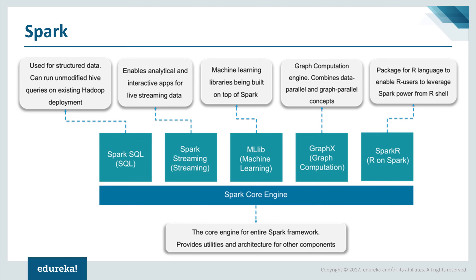Apache Spark is a lightning-fast cluster computing technology designed for fast computation. The main feature of Spark is its in-memory cluster computing, which increases the processing speed of an application. Spark performs similar operations to Hadoop modules but uses in-memory processing and optimizes the steps. The primary difference between MapReduce and Spark is that MapReduce uses persistent storage, while Spark uses Resilient Distributed Datasets (RDDs), which reside in memory.